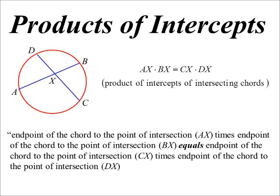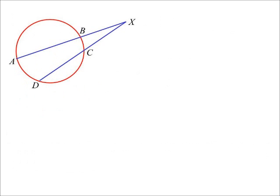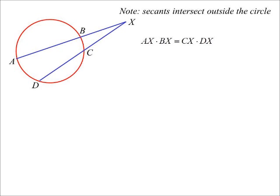I say they're all the same because if instead of having intersecting chords we had intersecting secants, we can still say the same thing: endpoint of the chord A to the point of intersection, times endpoint of the chord B to the point of intersection, equals endpoint of the chord to the point of intersection, times endpoint of the chord to the point of intersection. It's just that the point of intersection is now outside the circle, making the chords secants.